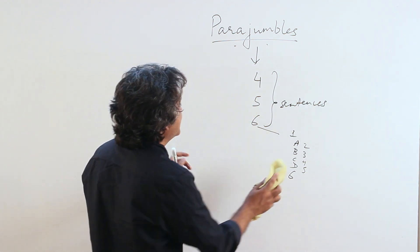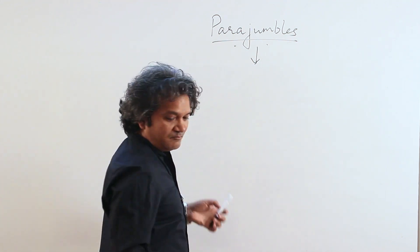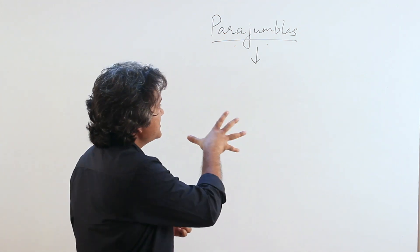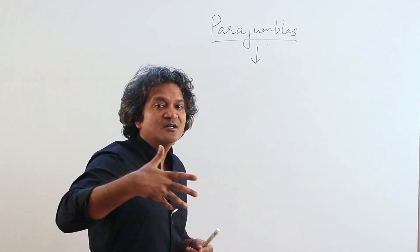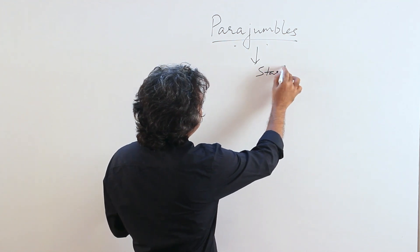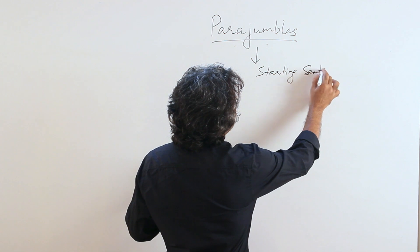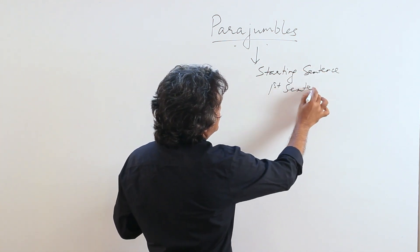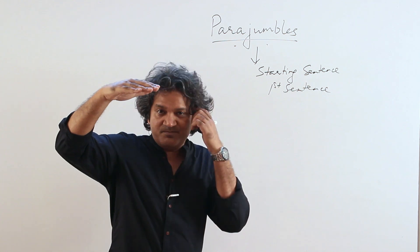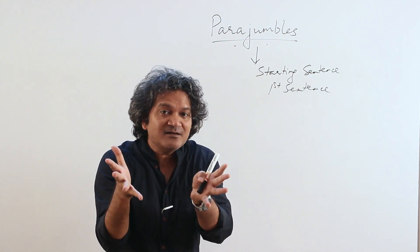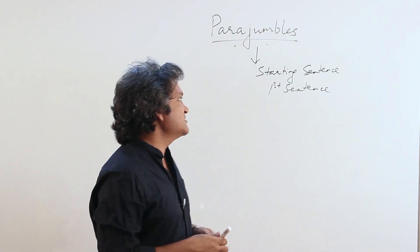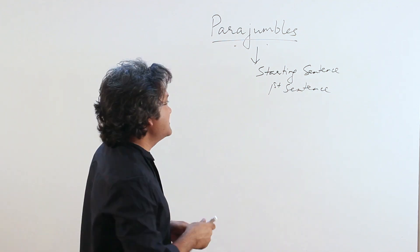One of the first things I recommend students not to do in a para jumble is what they naturally do — they consciously start looking for the starting sentence, the beginning or first sentence. From a commonsensical point of view it makes sense: if you're given five or six sentences forming a paragraph, there has to be a starting sentence, and starting sentences are usually general or introductory statements. That makes sense — but here is the problem.